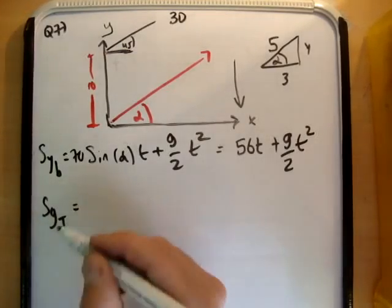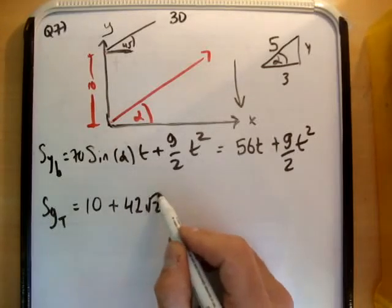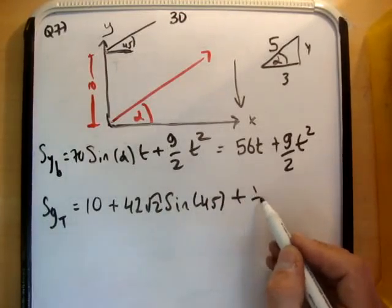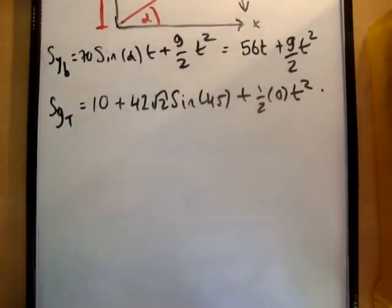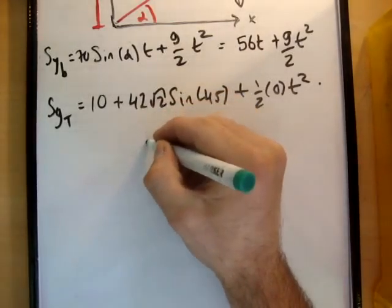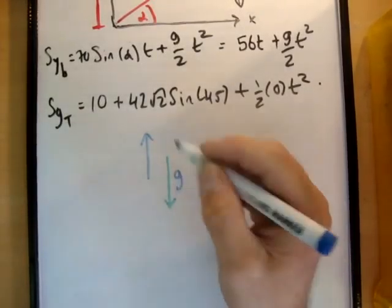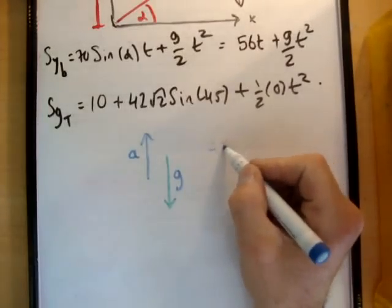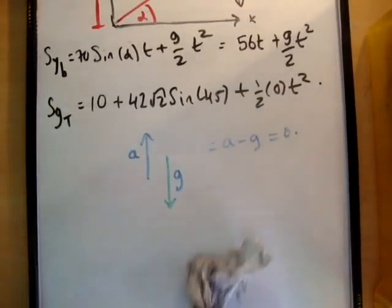And similarly, if you do s sub y for the target, you're going to get 10, which is the extra distance, plus its speed, which is 42 root 2 times the sine of 45 plus half 0 t squared. Now the fundamental thing here is, we're told that the target is not accelerating. So somehow its acceleration vector is 0. So just to explain this, if this is the gravity vector here, somehow the particle or the target has got an engine of some sort. And the engine is also accelerating the target in a direction that works like this. So this we'll say is g, and this is, we'll call that a. So the overall acceleration vector is equal to a minus g, and turns out, because it's done in a certain way, it turns out to be 0. So the net acceleration vector is 0. So that's why I had 0 in here.